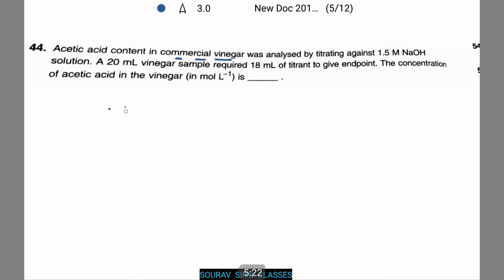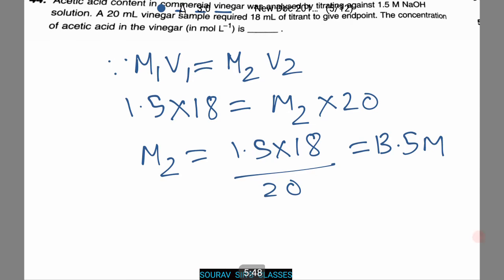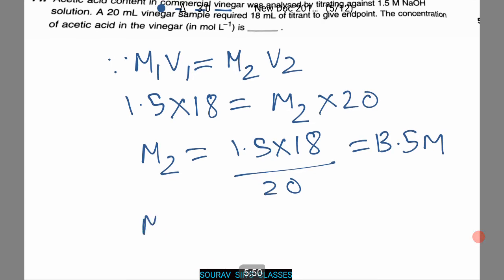Therefore remember the formula M1V1 equals M2V2. Now putting in the values from the question we find 1.5 times 18 equals M2 times 20. Thus M2 equals 1.5 times 18 by 20 giving us 1.35 moles of M2. Thus M2 equals 1.35 moles per liter.